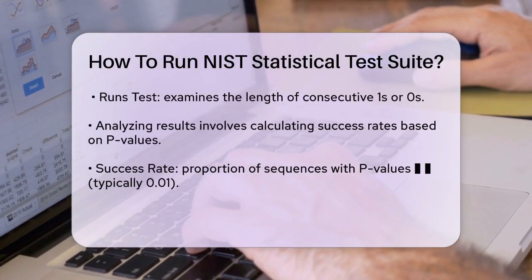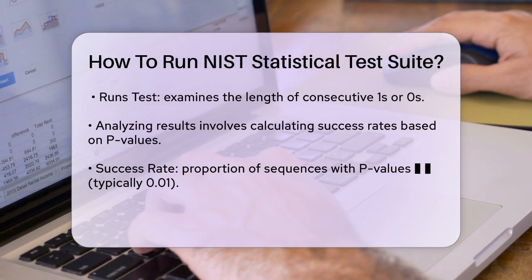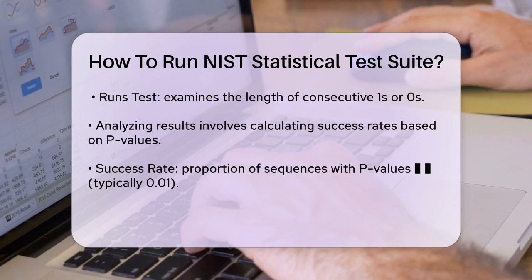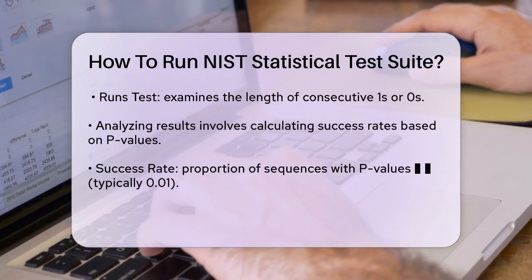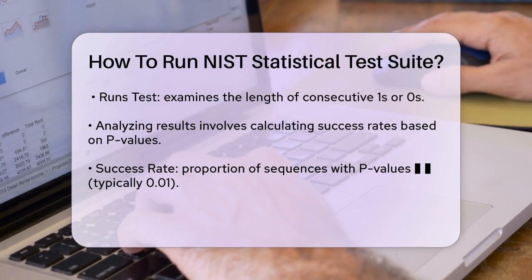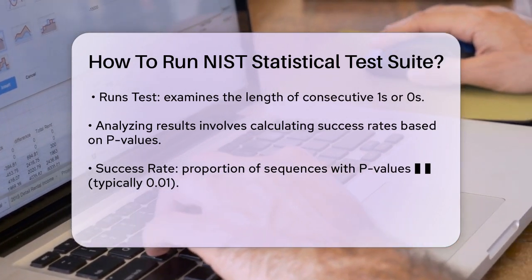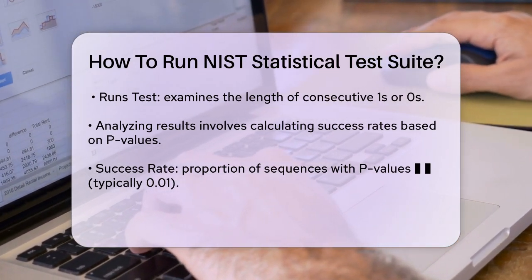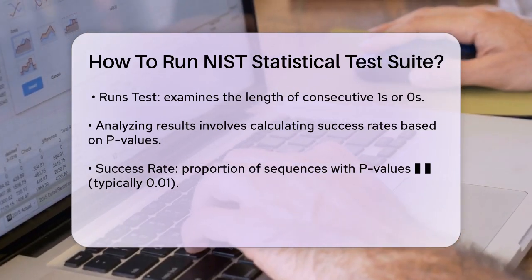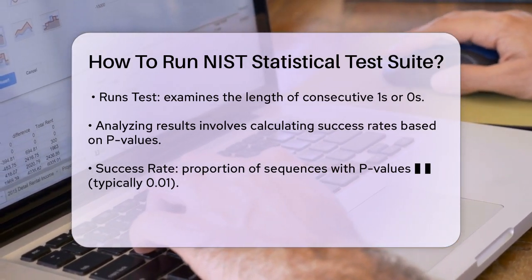For each test, you'll get a set of p-values corresponding to each sequence. To interpret these results, calculate the success rate: the proportion of sequences whose p-values satisfy p-value > α, where α is the significance level, typically set to 0.01. If this proportion is close to 1 minus α, the test is passed. Also check the uniformity of p-values by computing a chi-squared value and then calculating the p-value of the p-values. If this p-value is greater than or equal to 0.001, the distribution is considered uniform.